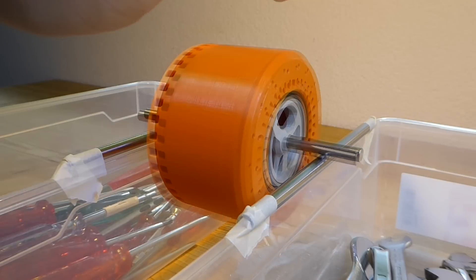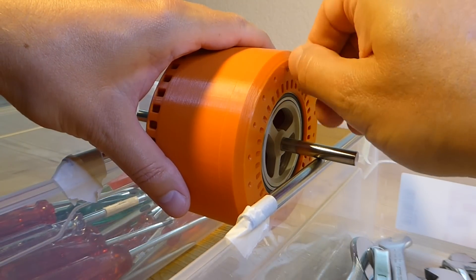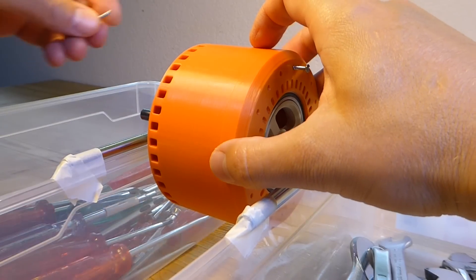Small screws are inserted into the holes at the top as a counterweight. I recommend to insert the same weight on both sides of the rotor.